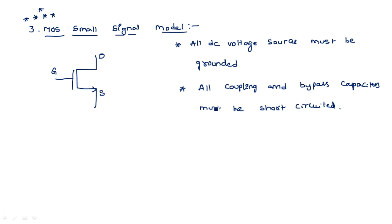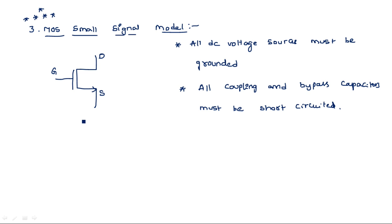All coupling and bypass capacitors must be short-circuited. These are the two important points to remember when transferring the transistor model into a small signal equivalent model. The small signal equivalent model is also known as the AC small signal equivalent model, because we are considering only AC sources by short-circuiting all DC sources.